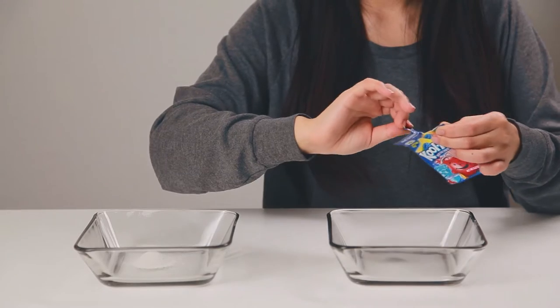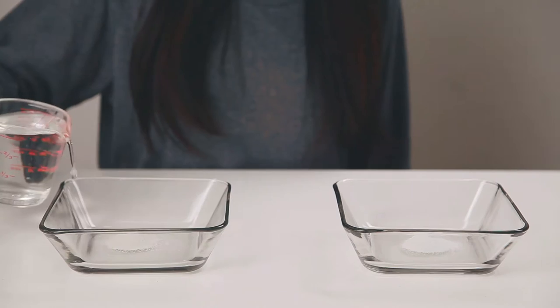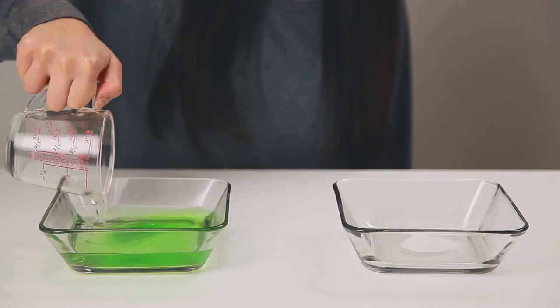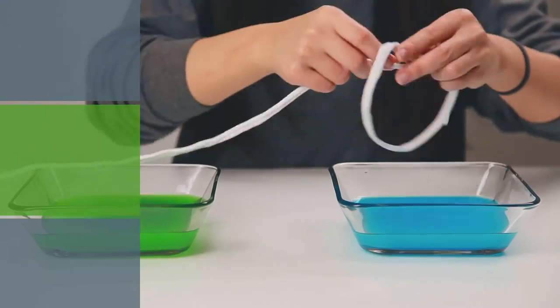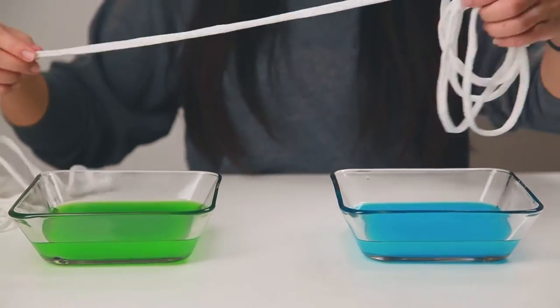Choose the colors that you want to use. Pour half of the Kool-Aid packet into the bowl, then add water and mix it. Be creative when dyeing your fabric. I'm going to make a pattern of blue, green, and then blue. Measure out how much of each color you want and then put them in the bowls.